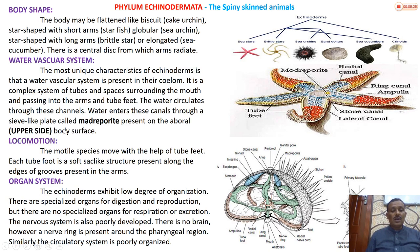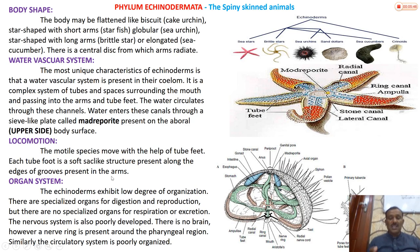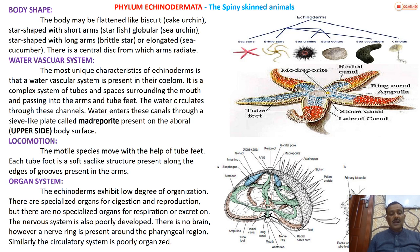The madreporite is present on the aboral side - the upper side. Regarding locomotion: the motile species move with the help of tube feet. Each tube foot is a soft sack-like structure present along the edge of grooves in the arms.